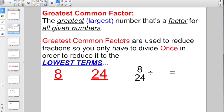And greatest common factors are used to reduce fractions, so you only have to divide once in order to reduce it to the lowest terms. What may start happening now, you take a look at 8 and 24, and if you don't really use the greatest common factor, maybe you'll say, oh, you could divide both of those by 4. And absolutely, you could.